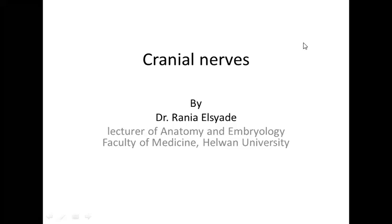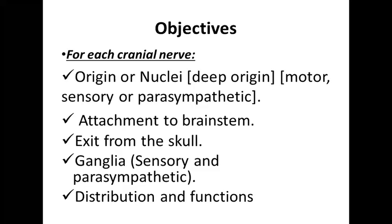Assalamu alaikum. We will talk about cranial nerves. Our objectives for each cranial nerve: you should know the origin or the deep nuclei — the deep origin of the cranial nerve — whether it is motor, sensory, or parasympathetic. Second, the attachment to the brainstem (or to the brain for the first two cranial nerves), how it exits from the skull, the ganglia for sensory and parasympathetic nerves, and lastly the distribution or function of the cranial nerve.